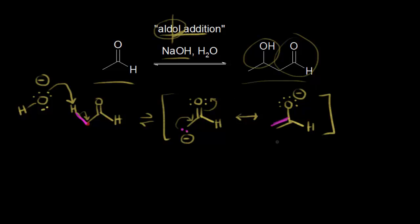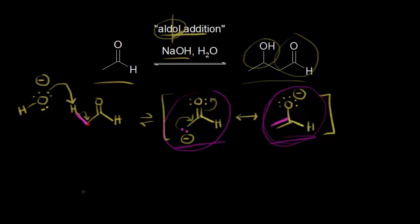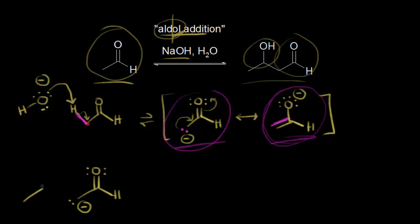The negative charge is best supported on oxygen, so the oxyanion is probably the best way to show an enolate anion. However, for aldol condensations I'm always going to use the carbanion as our enolate anion — it's a little bit easier for students to follow the mechanism that way. Because sodium hydroxide is not basic enough to completely form enolate anions, only a small amount of your enolate anion is formed, and so this can act as a nucleophile and attack another molecule of acetaldehyde.